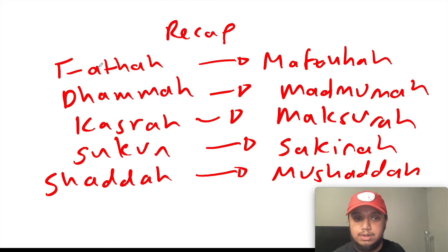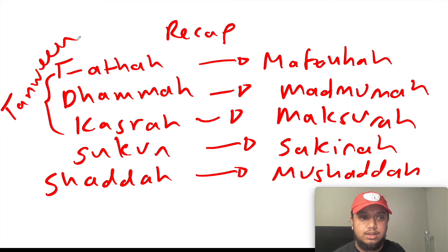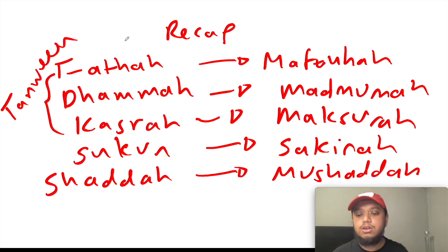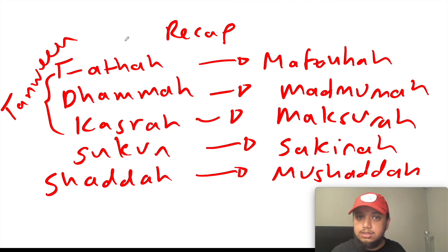It is also important to note that letters can sometimes have two fathas, two dhammas, or two kasras on them. In that case, that is known as tanween — so these would be called fathatan, dhammatan, and kasratan. We don't need to bog ourselves down with this for now, as it will be covered in later classes.